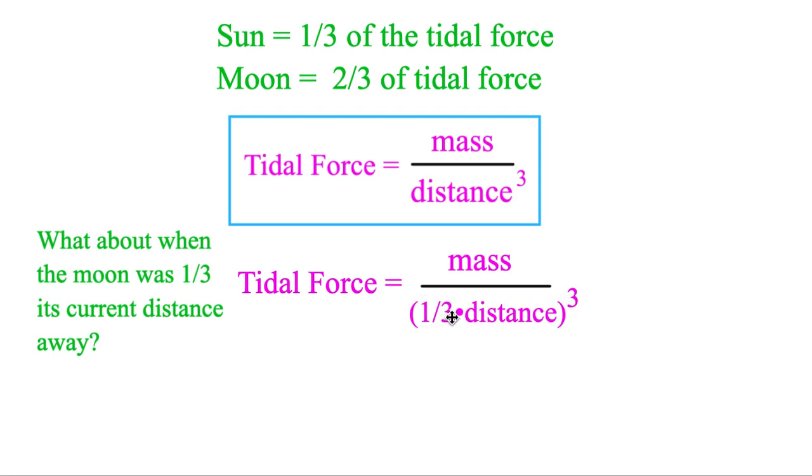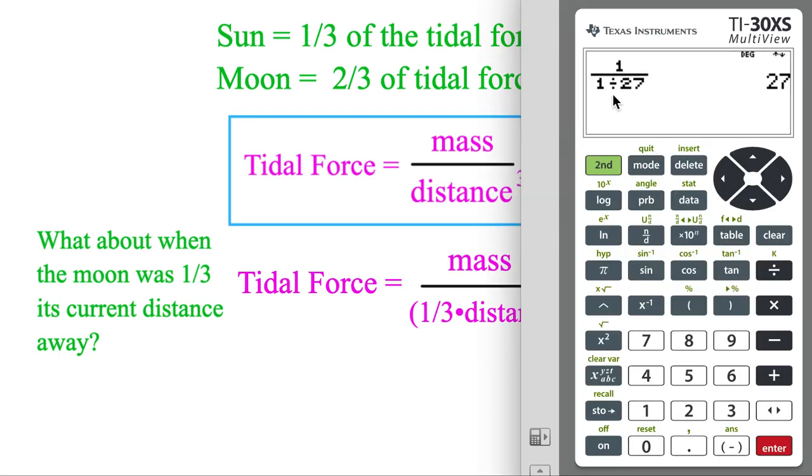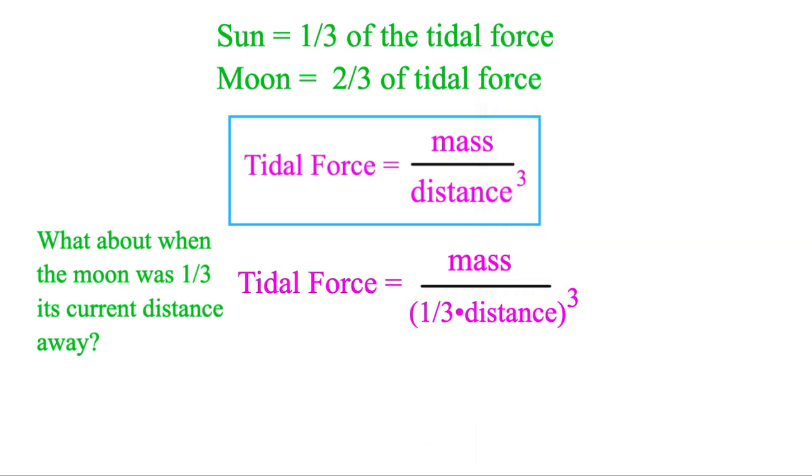That'll give us 1 over 27 in the bottom there. But that's actually the same thing as multiplying the whole equation by 27. So therefore, when the Moon was three times closer, the tidal force was 27 times greater. Unbelievable.